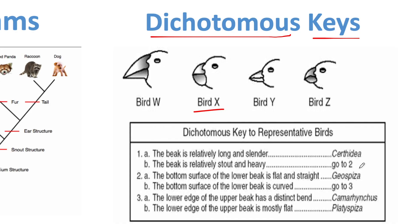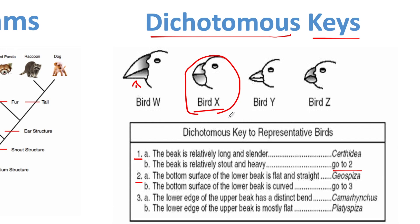'Dicho' means two, so for each trait there are going to be two options — either you have it or you don't. Most of the time if you don't have it, it will refer you to another step. Let's take a look: if I want to focus only on Bird X, I don't care about Bird W, Y, or Z. We always have to start at Step One, always start at A. 'The beak is relatively long and slender' — no. 'The beak is relatively stout and heavy' — yes. Going to Step Two. 'The bottom surface of the lower beak is curved' — yes, going to Three.